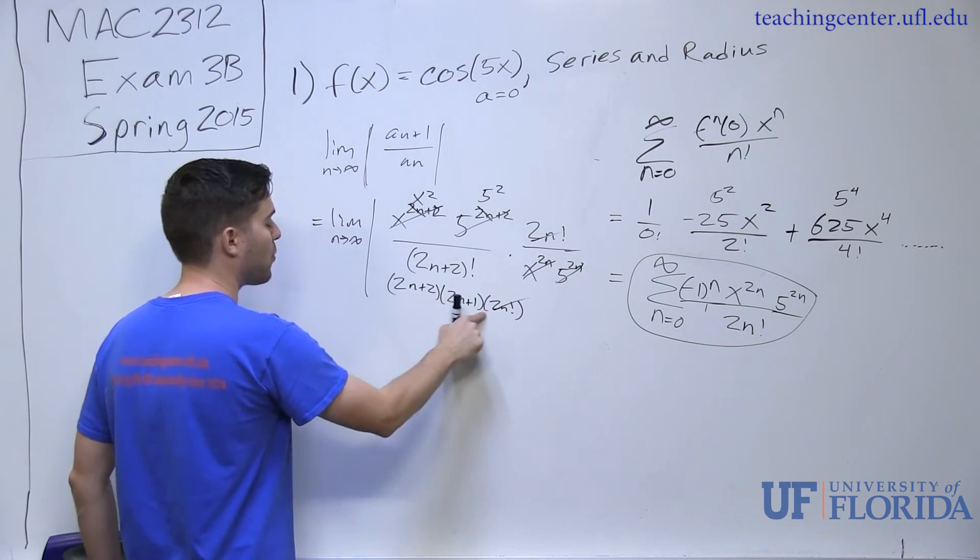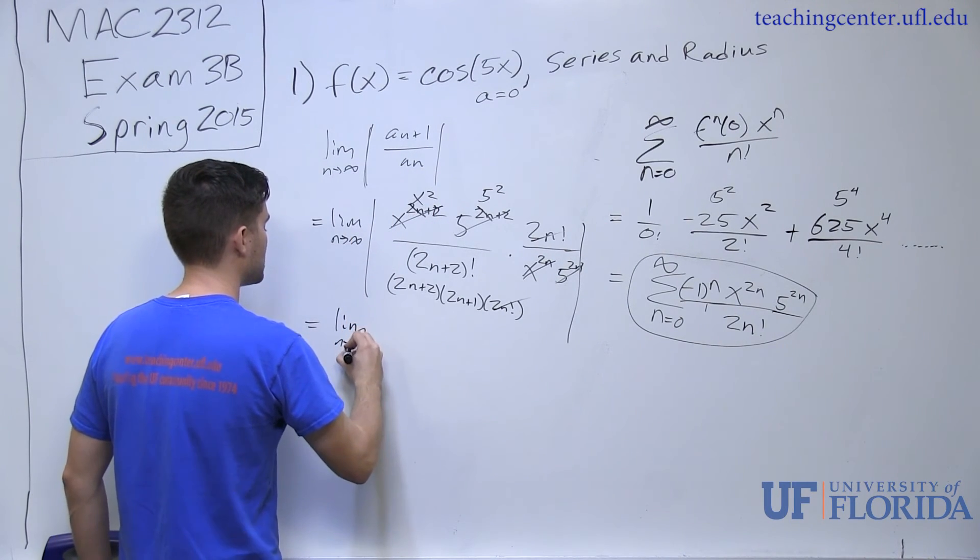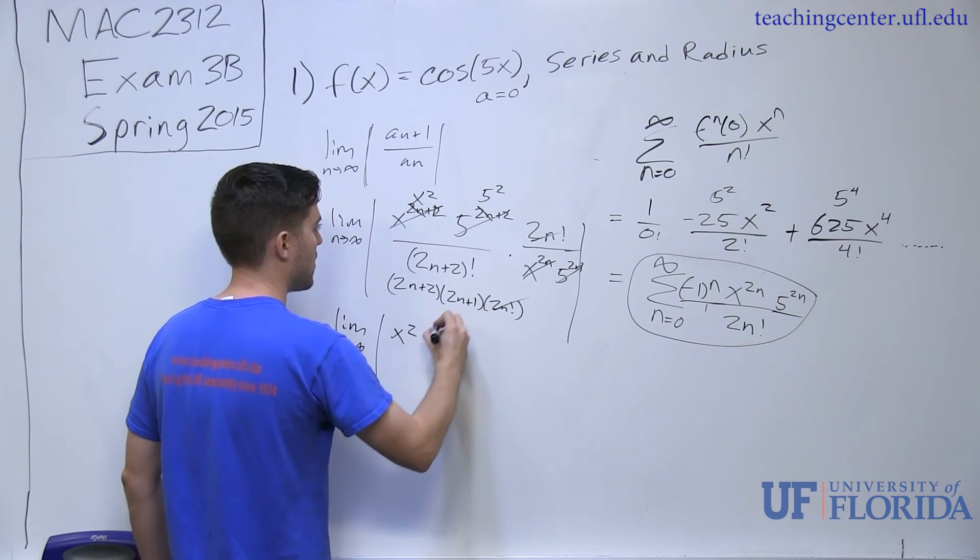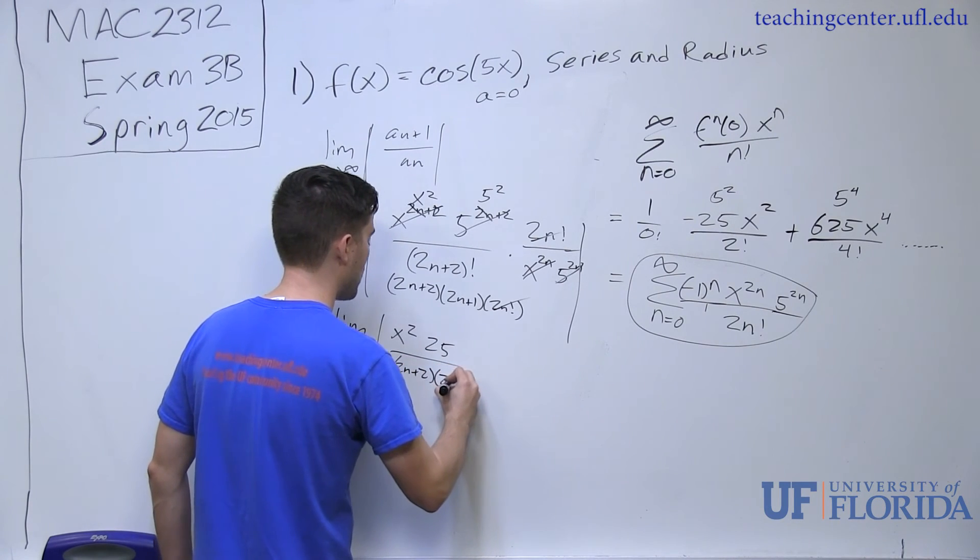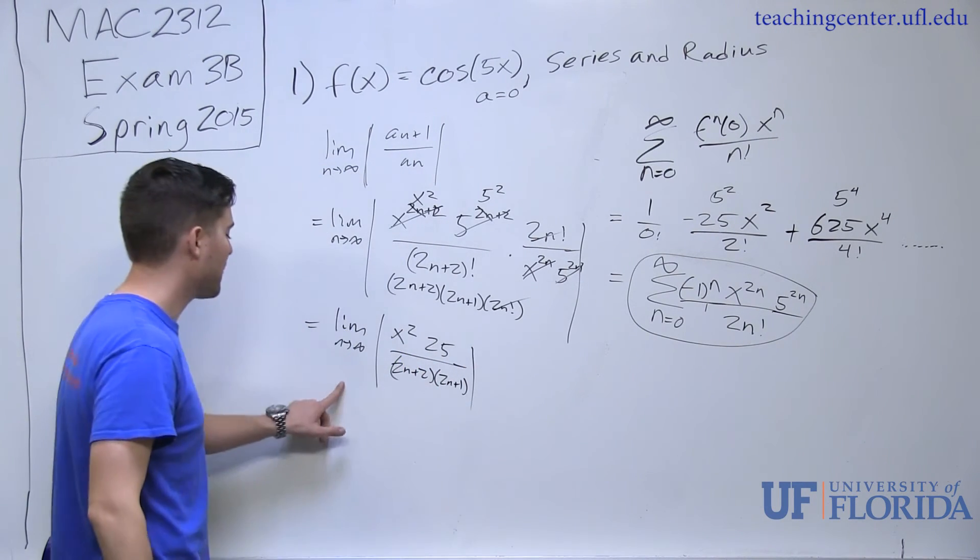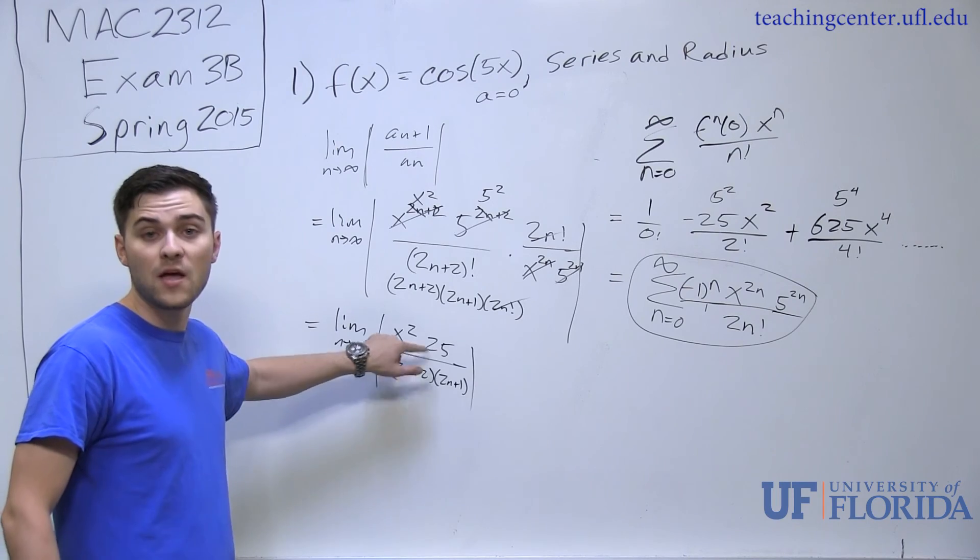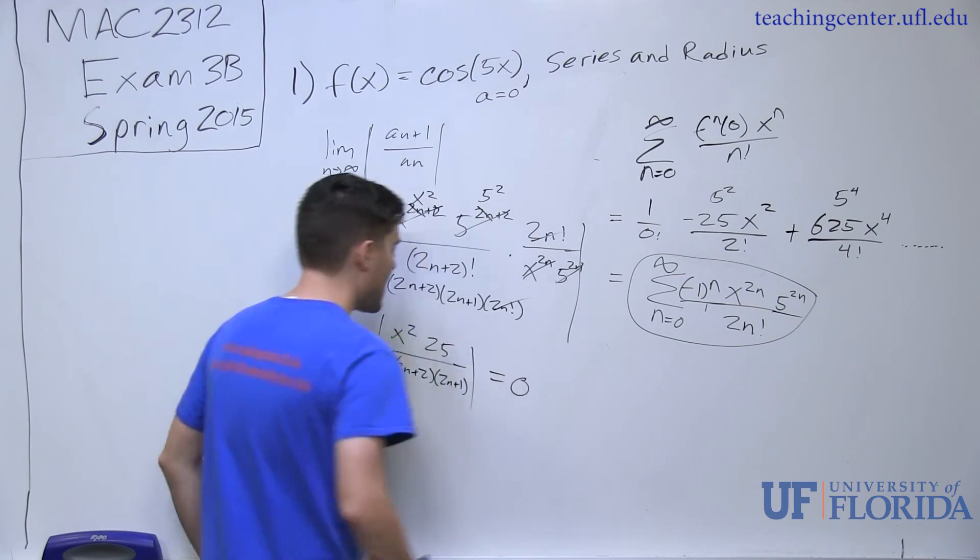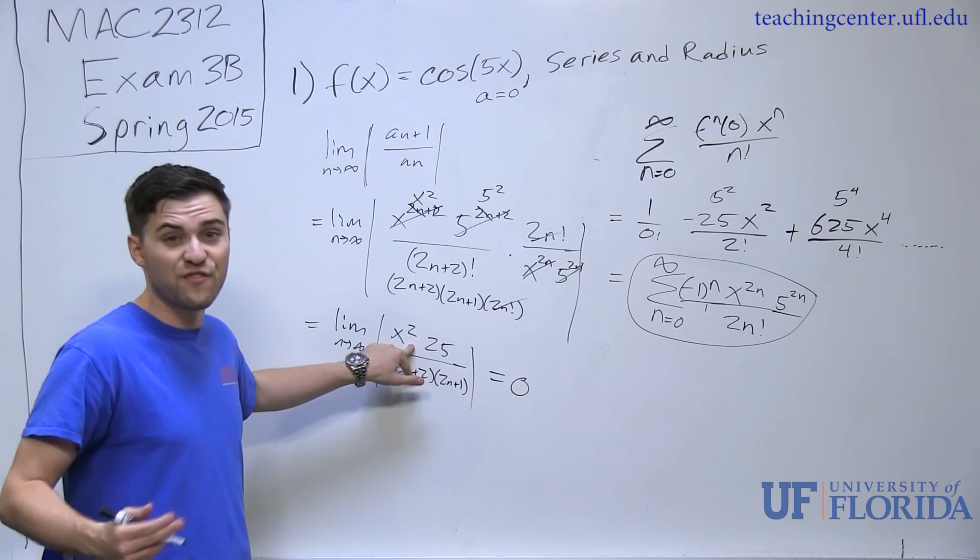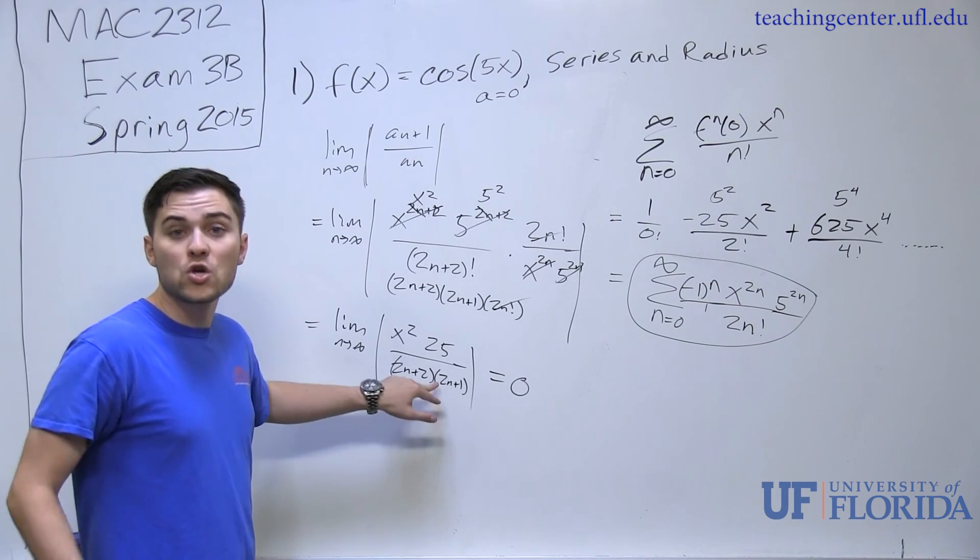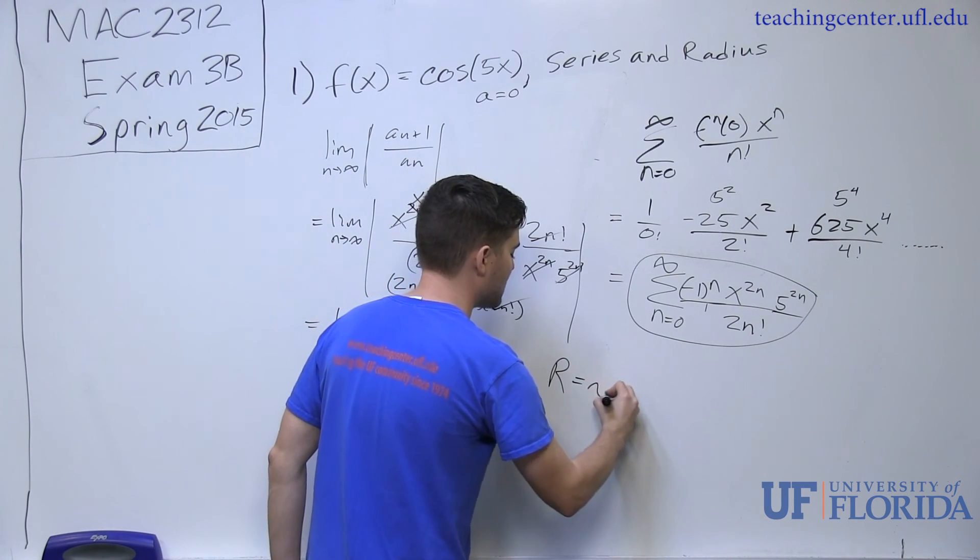I can cancel that as well and we are left with a couple extra n terms. It is important to note in this case that if I take the limit as n approaches infinity, I have x squared 25 over 2n plus 2, 2n plus 1. If I take the limit to this as n approaches infinity, because I still have n terms on the bottom but no n terms on top, this whole limit goes to 0. Because this whole limit goes to 0, regardless of whatever x value I plug in, say for infinity, I should always get 0. What this tells me is that because any x value will satisfy this, my radius of convergence is equal to infinity.